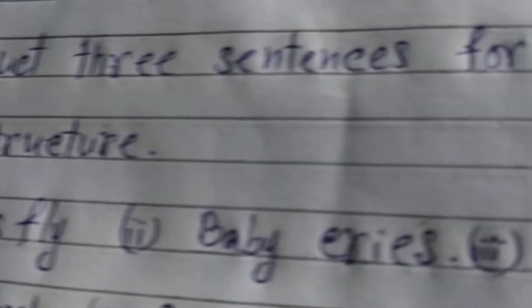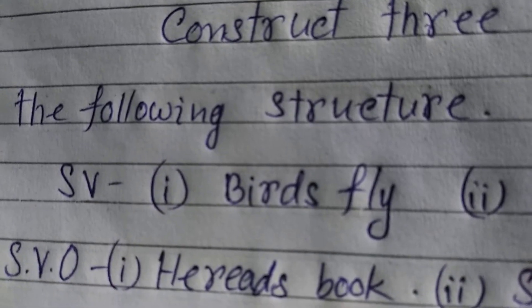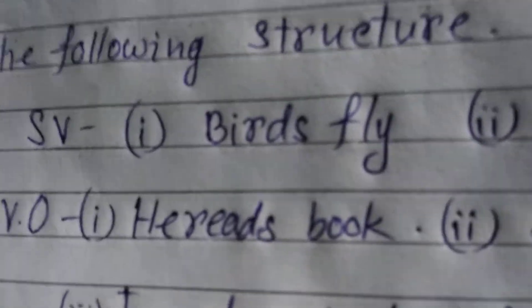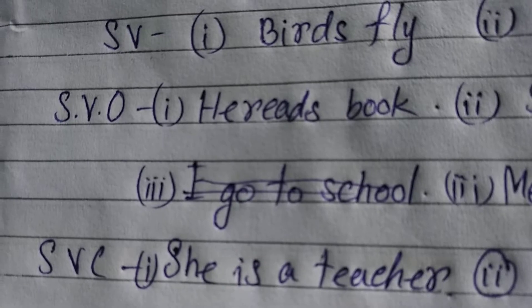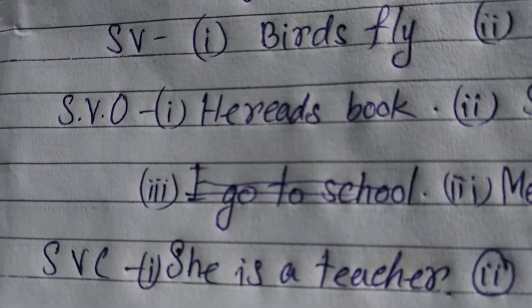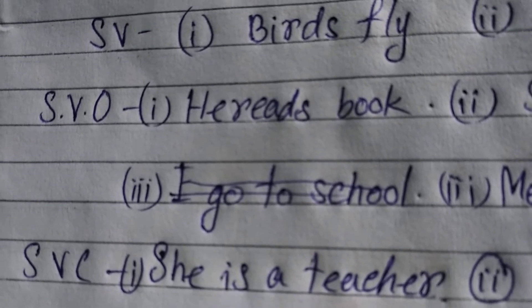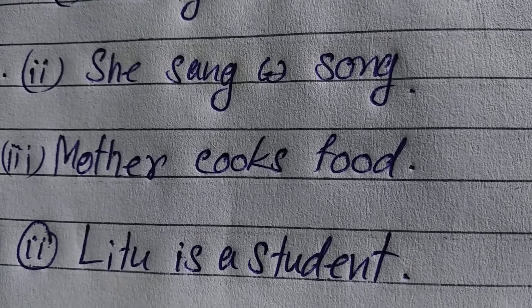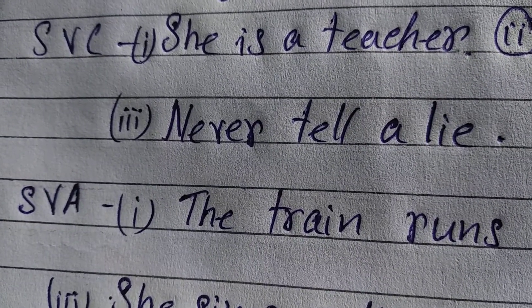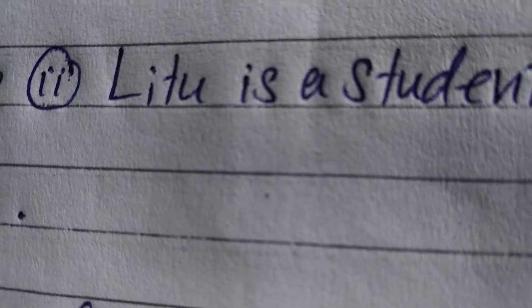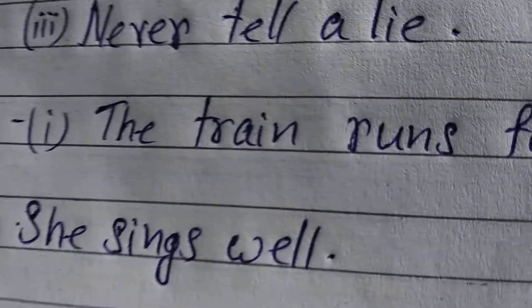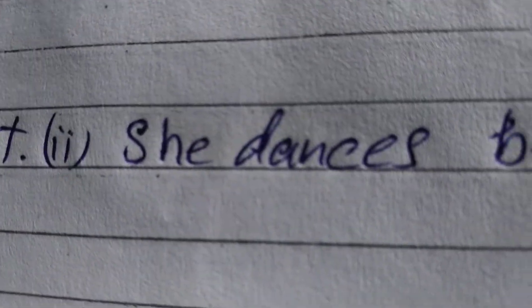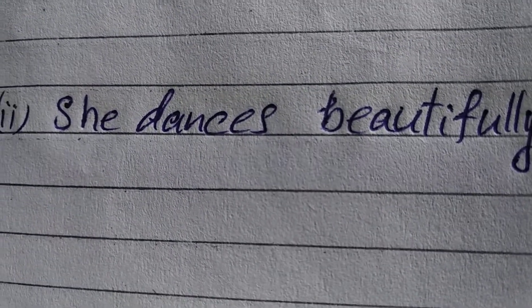Activity 2: Construct 3 sentences for each of the following structures. We read a book. Never tell a lie. The train runs fast. She dances beautifully. She sings well.